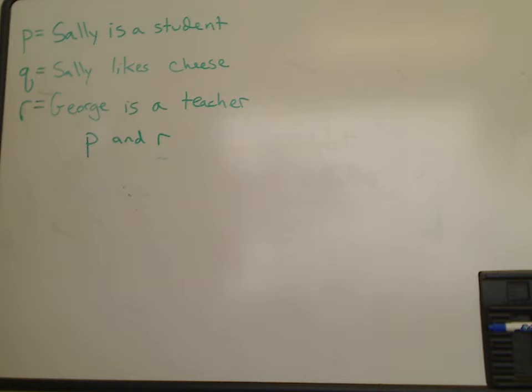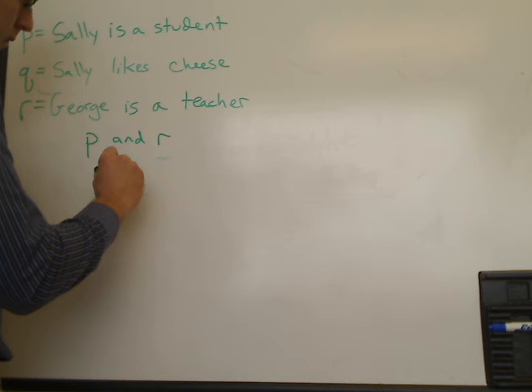Now to make our lives even a little bit easier, we actually have simplified symbolic logic to represent the basic conjunctions that we have for these propositional statements. So for and, we can write the little caret symbol. And the caret symbol means and.